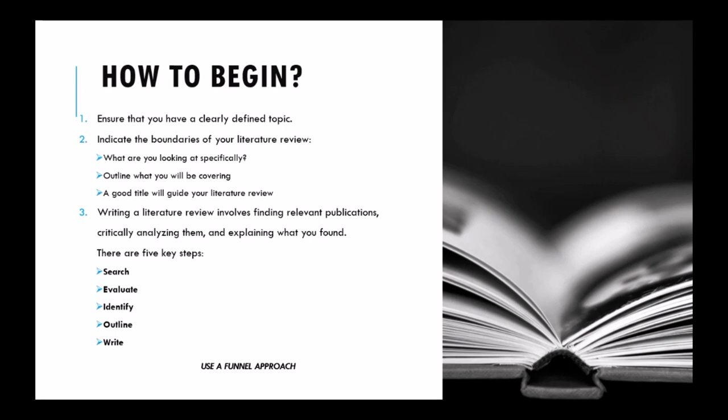How do we begin with the literature review? Before you start searching for literature, ensure that you have a clearly defined topic. Start by indicating the boundaries of your literature review — there is a huge amount of literature out there, but you have to be concise about what you want to research. For example, if you focus on violence, there is a massive body of research, but your particular topic will guide you — perhaps childhood violence, child maltreatment, or intimate partner violence.